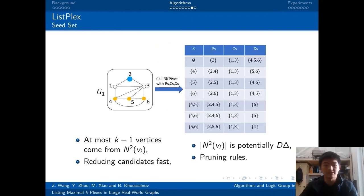As for the seed set, the similar question is, why do we need seed set? The first reason is, according to the definition of k-plex, at most k-1 vertices can come from the v_i's two-hop neighbors. Second, meanwhile, the number of two-hop neighbors is potentially d times delta. So that's a terrible contradiction. But it means, if we can eliminate two-hop neighbors first, we can reduce the candidates fast and improve the performance. The last reason is, comparing to v_i's one-hop neighbors, the two-hop neighbors are often loosely connected. It means we can apply some pruning rules during this initial stage.